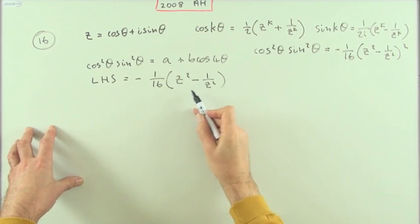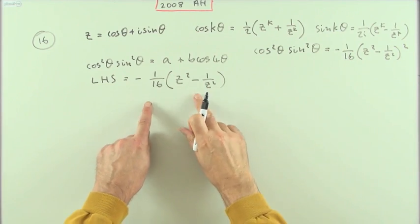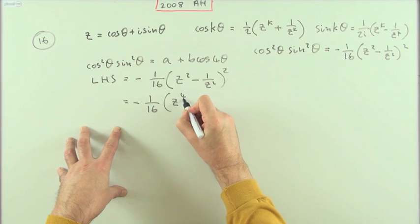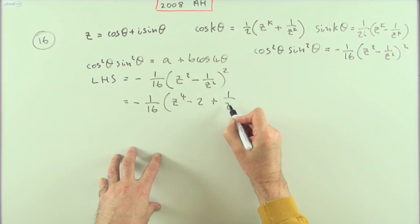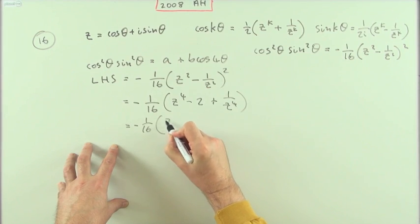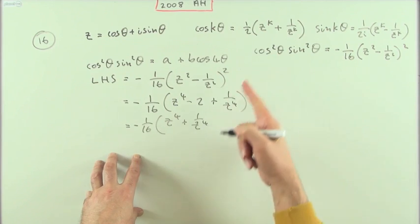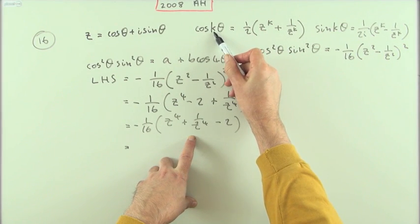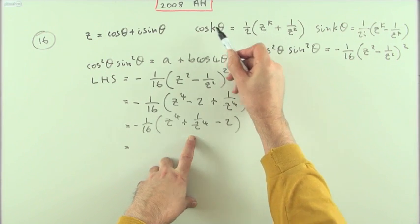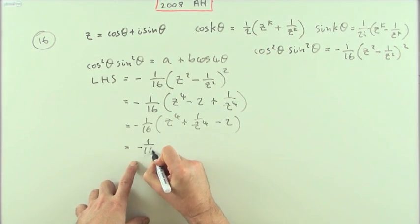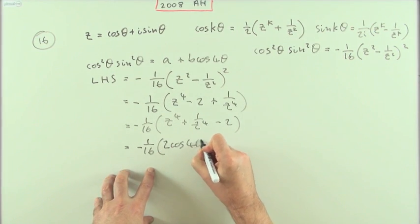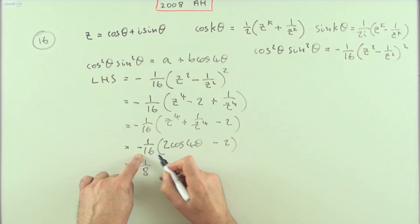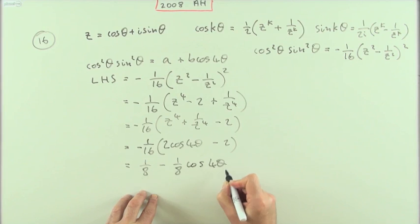Alternatively, and perhaps less taxing on memory, expand the bracket directly: -1/16 of (z² - 1/z²)² expands to -1/16 of (z⁴ - 2 + 1/z⁴). Grouping z⁴ + 1/z⁴ as 2·cos(4θ) when k = 4, and bringing across the factor gives 2·cos(4θ). So we get -1/16 of (2·cos(4θ) - 2), which multiplied out gives 1/8 - 1/8·cos(4θ), confirming a = 1/8 and b = -1/8.